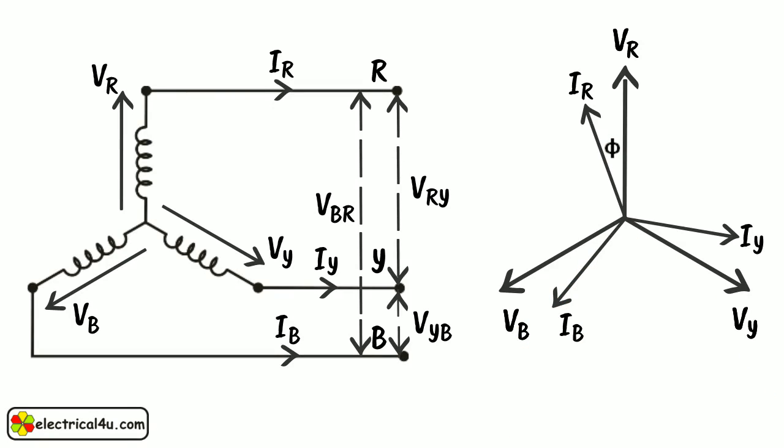The phase angle between voltage and current in each phase is Φ. As we have considered that the system is perfectly balanced, the magnitude of current and voltage of each phase is the same.